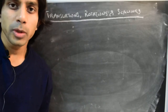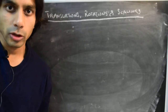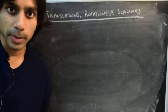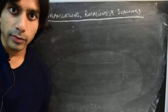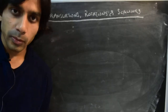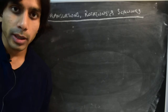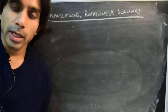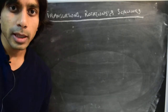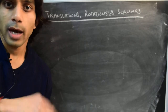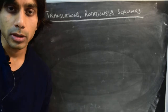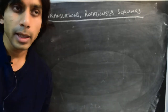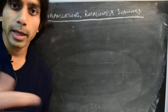In the previous video we started talking about functions of complex variables and discussed different possibilities for representing these functions pictorially. There are at least three different possibilities, and one of the most commonly used is to make two copies of the complex plane — a z-plane and a w-plane — with a function or mapping taking you from the z-plane to the w-plane.